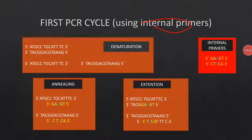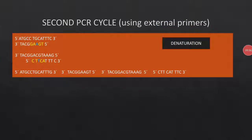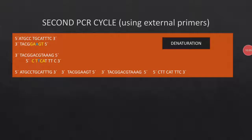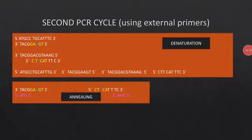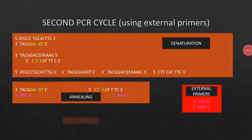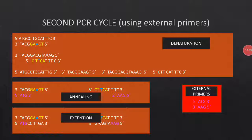In the second PCR cycle, we use external primers. The product of the first PCR cycle serves as input. Denaturation produces four different strands. During annealing, the external primers bind at the edges of the DNA strand. The daughter strands attach to them as the external primers are specific for those daughter strands. During extension, PCR enzymes synthesize the new DNA strands using these primers.